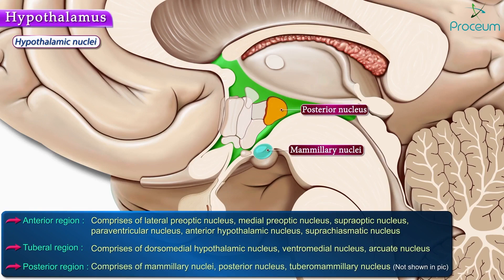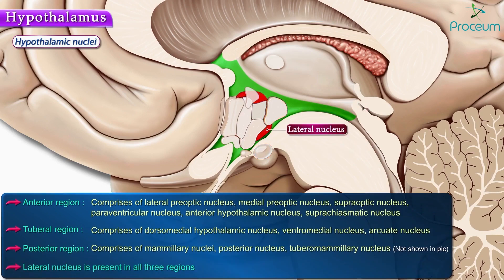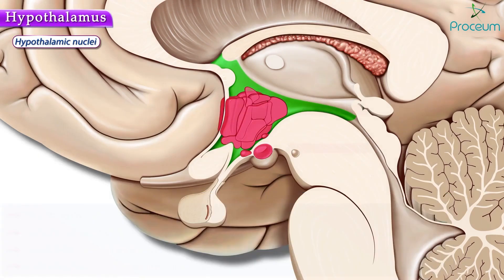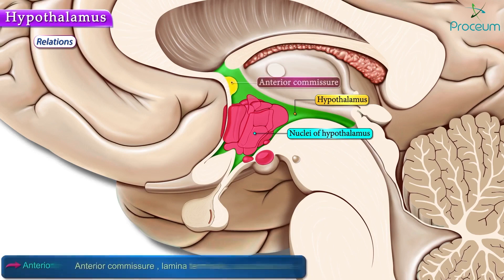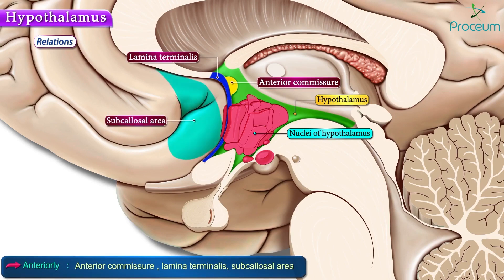The lateral nucleus is present in all three regions. Now let's understand the relationship of the hypothalamus to its surrounding structures. Hypothalamus is bound anteriorly by the anterior commissure and the lamina terminalis. The subcallosal area with its gyrus is also related anteriorly, but just beyond the anterior commissure and the lamina terminalis.